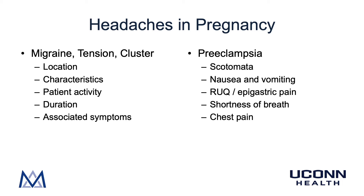The following characteristics help us differentiate between these types of headaches. First, the location: migraine headaches tend to be unilateral, whereas tension type are bilateral, and cluster headaches are almost always unilateral, usually beginning around the eye or the temple. Migraine headaches tend to be gradual in onset with a crescendo pattern and are often pulsating. Tension-type headaches feel like pressure or tightness, and cluster headaches begin very quickly and reach a crescendo rapidly. The pain is deep and continuous.